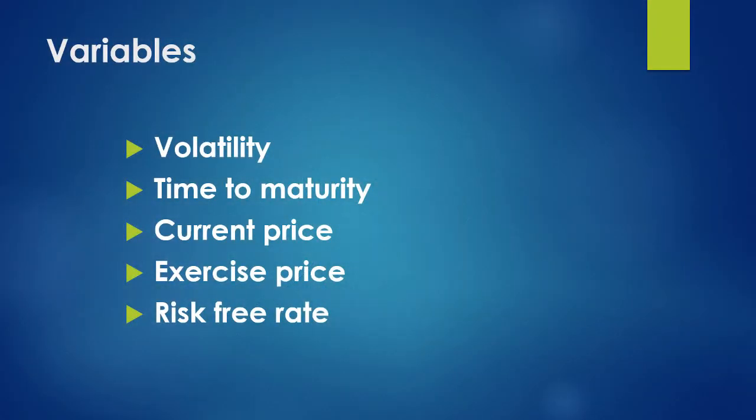This calculation works by using five different variables: volatility, time to maturity, current price, exercise price, and risk-free rate. You look at the assumptions you're making for those five variables, plug them into the equation, and the equation will spit out a value for how much you should pay for this option.